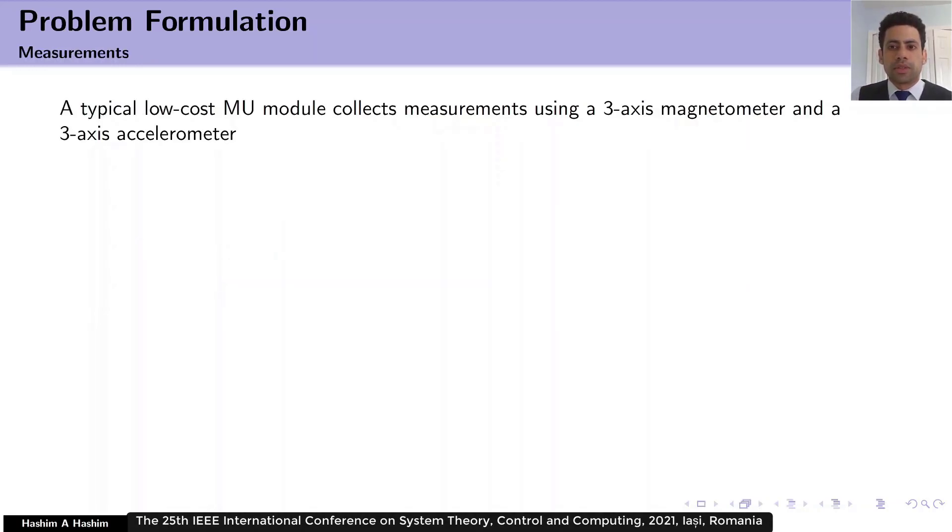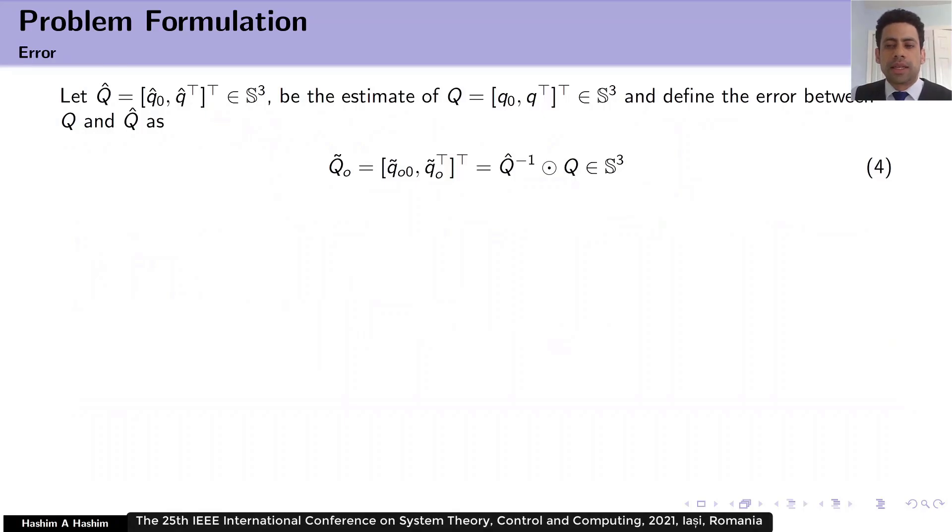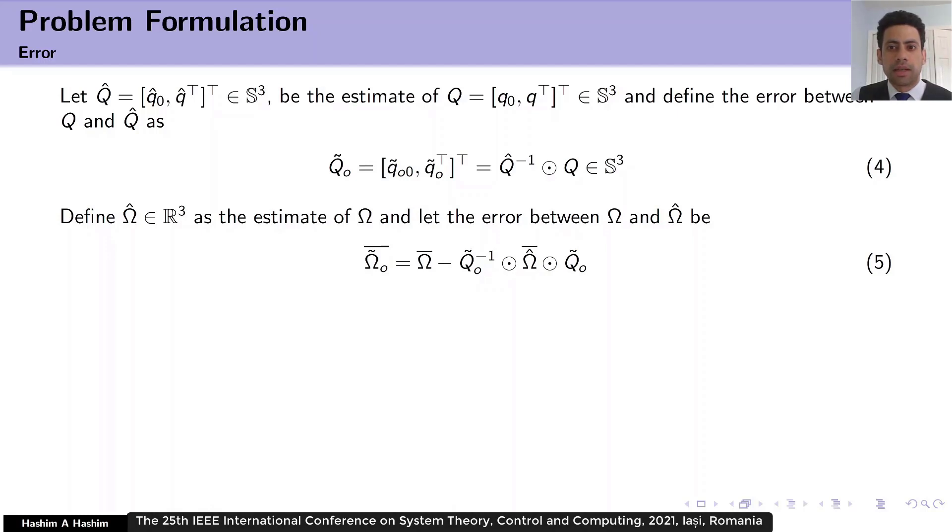It is important to assume that the number of observations as well as measurements in equation 2 has to be greater than or equal to 2 at each time instant. Here q hat is the estimate of q. Now, let us define the error between q hat and q as is shown in this equation. Similarly, let omega hat be the estimate of omega and define the error between omega hat and omega as is shown in this equation.